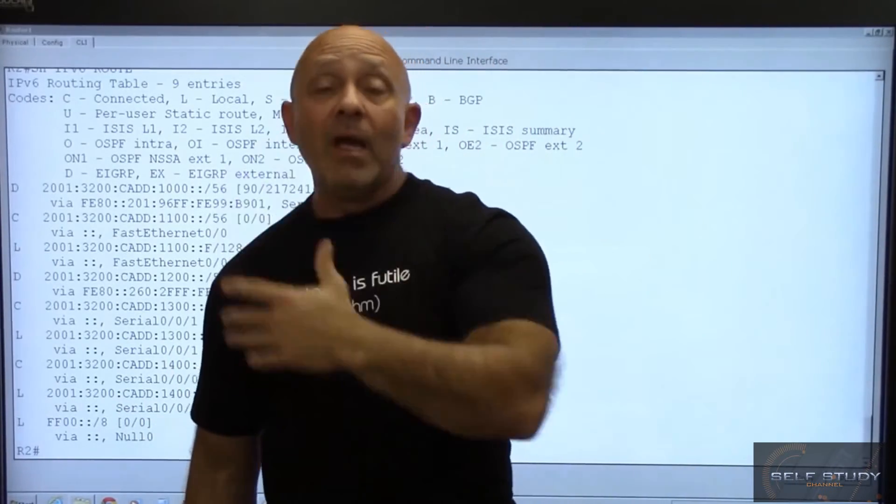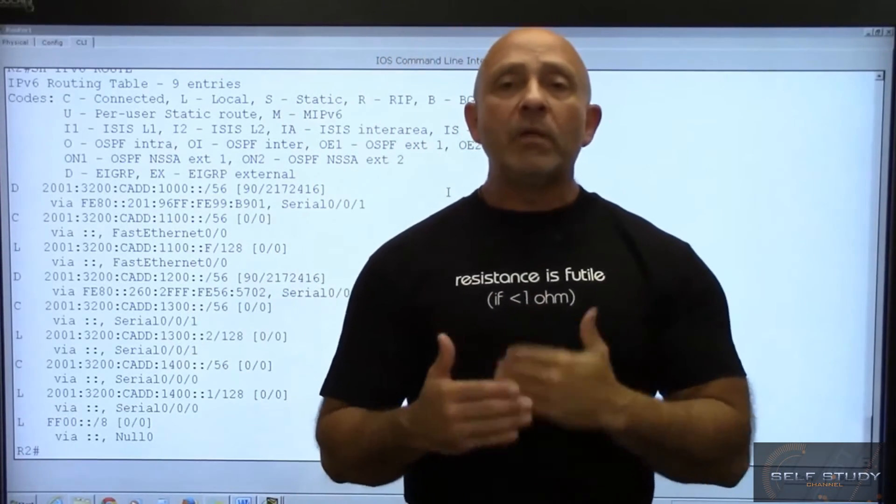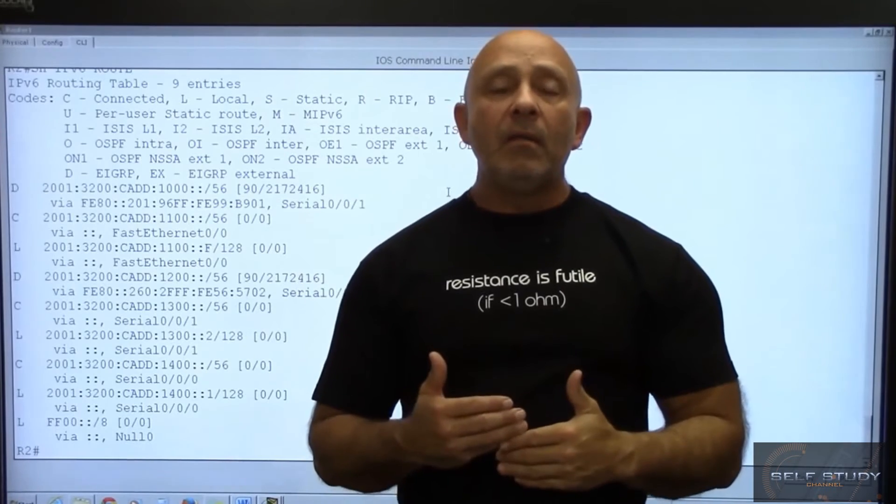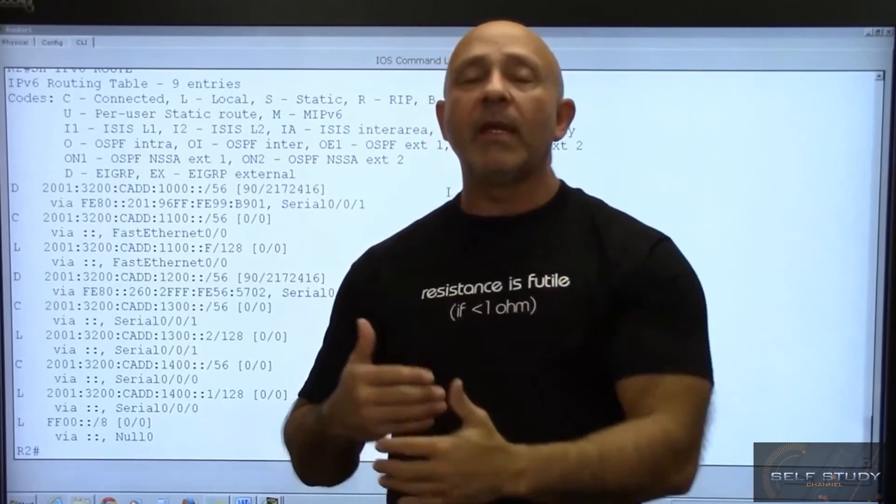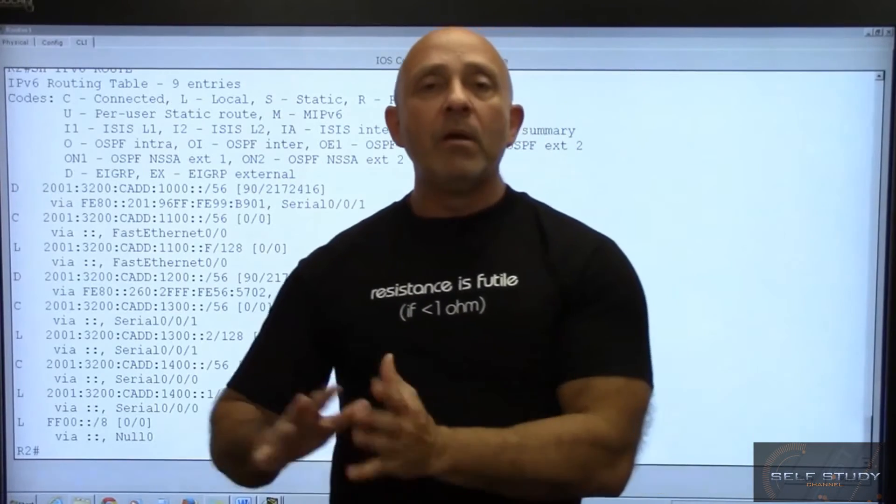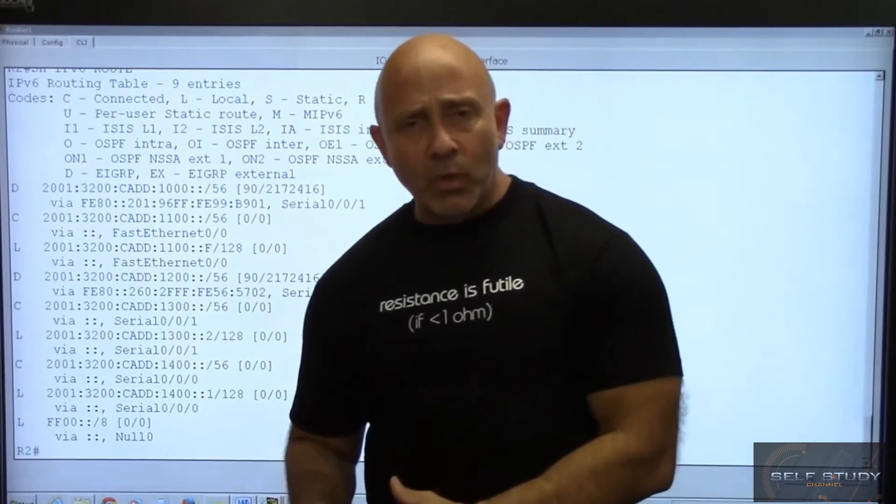That one router may be IPv6, the other one is IPv4, so it creates these tunnels that will transform or carry the IPv6 on an IPv4 network until it gets to the other side. That will be another transition mechanism that you can use.